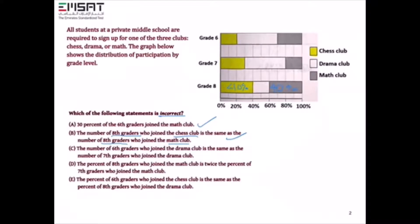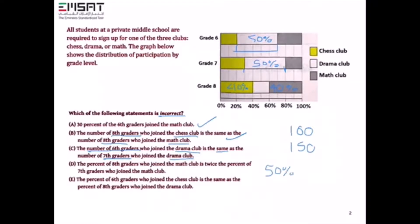Option C states that the number of 6th graders who joined the drama club is the same as the number of 7th graders who joined the drama club. Both have 50% participation in drama. However, 50% of 100 is not equal to 50% of 150, so the actual numbers differ. That is exactly why this statement is incorrect.